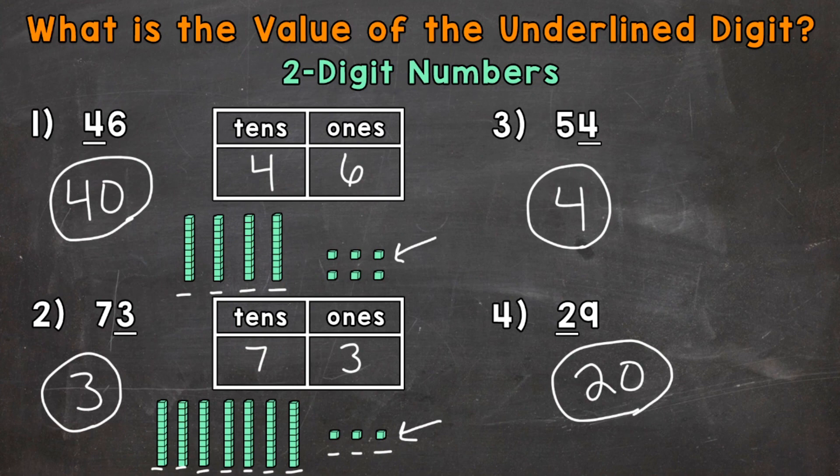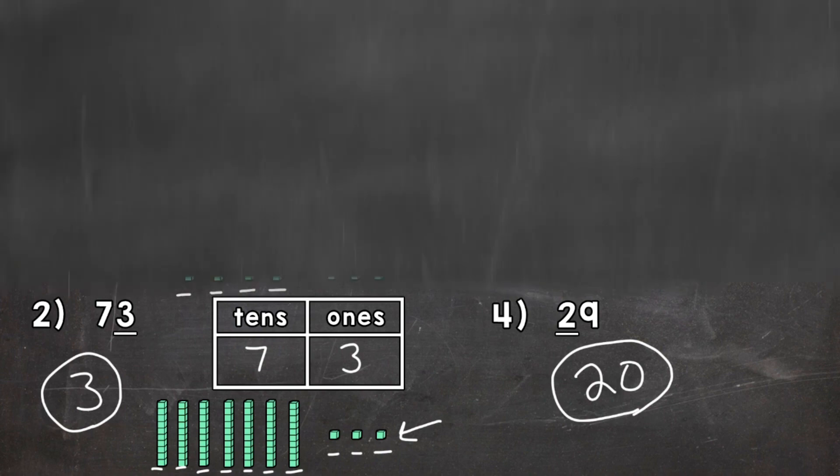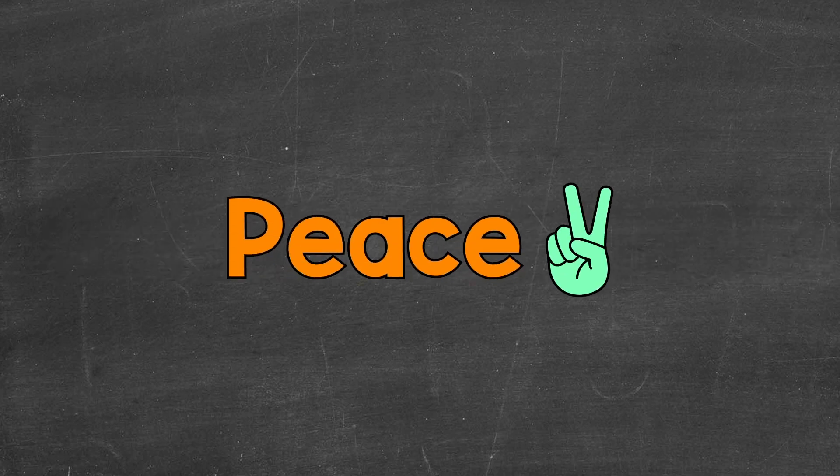So there you have it. There's how you determine the value of an underlined digit within a two-digit number. I hope that helped. Thanks so much for watching. Until next time, peace.